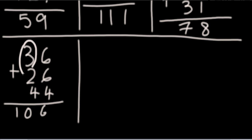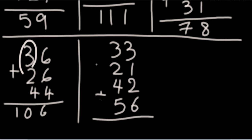So again 30, 50, 90 and then you're going with the complement 100, 106. Let me take one more example and that will be the last example. You can copy this down: 33, 21, 42, 56. So 30, 50.